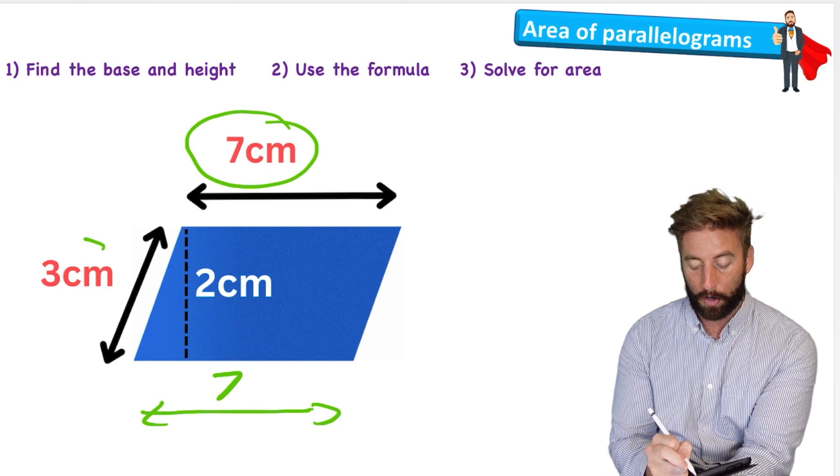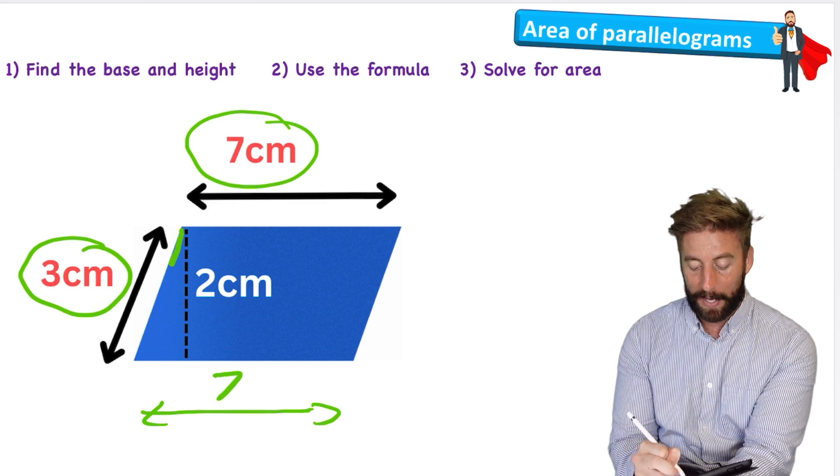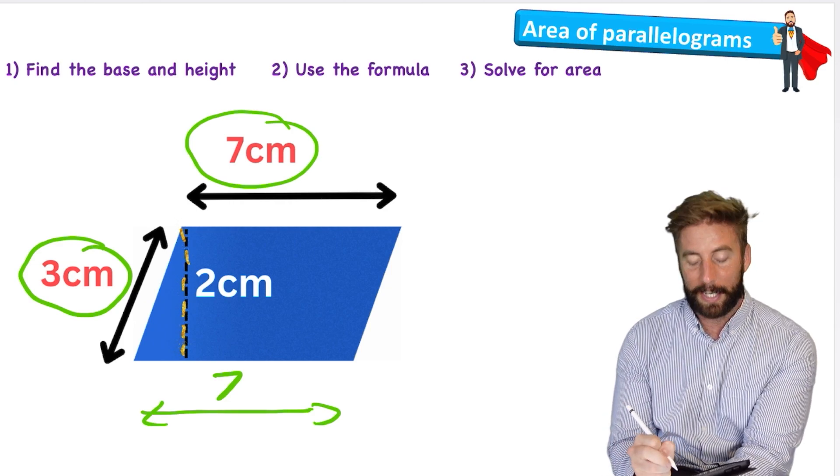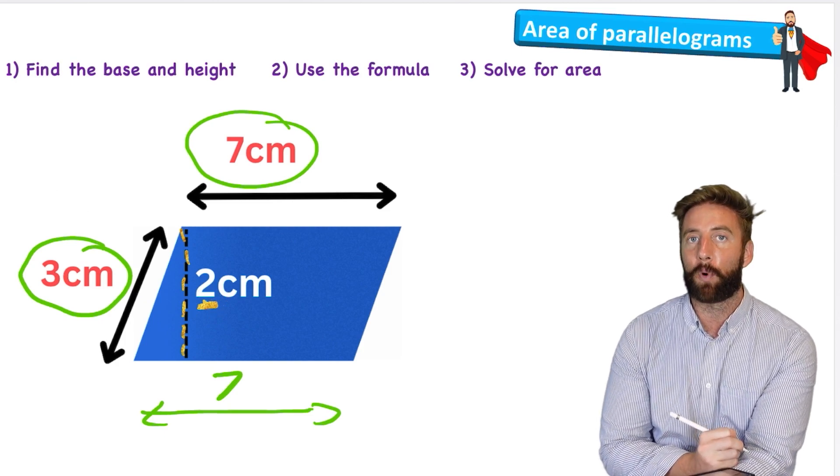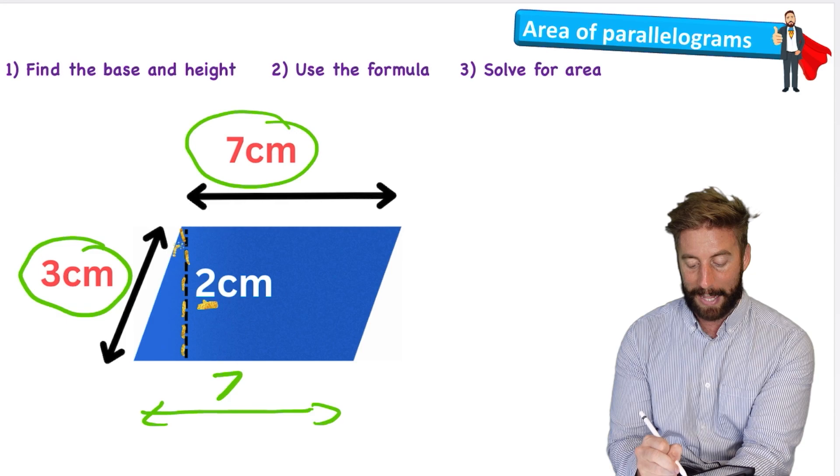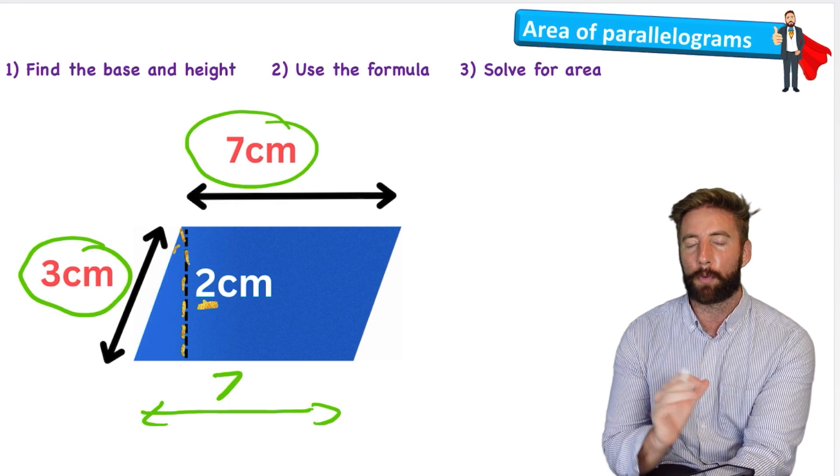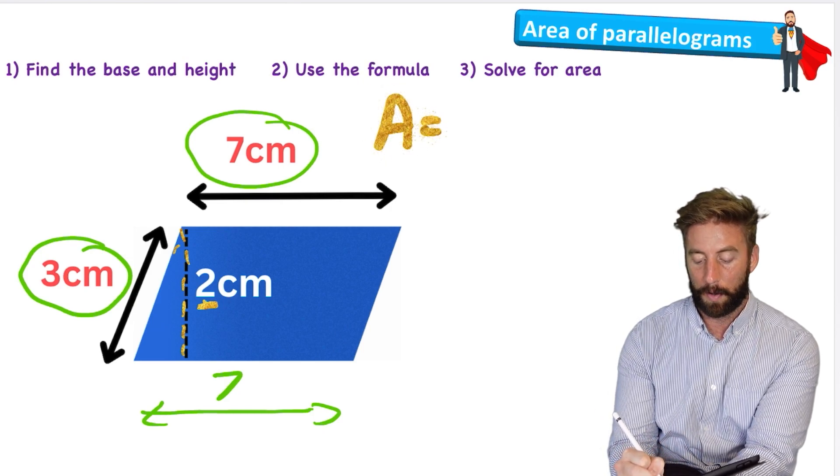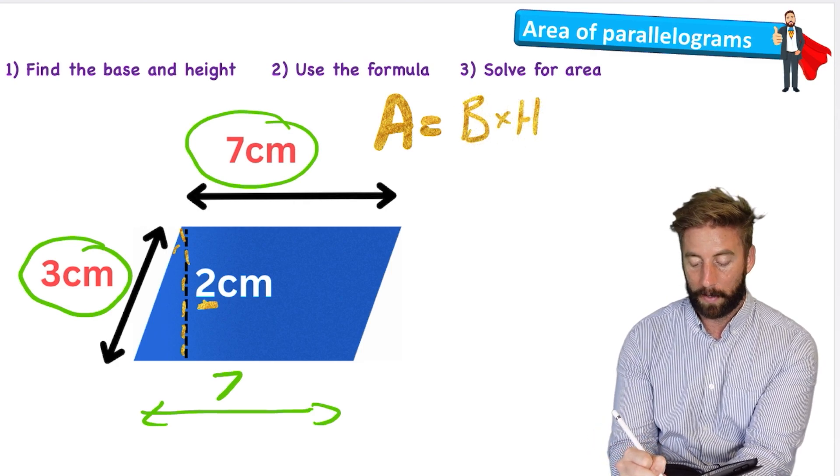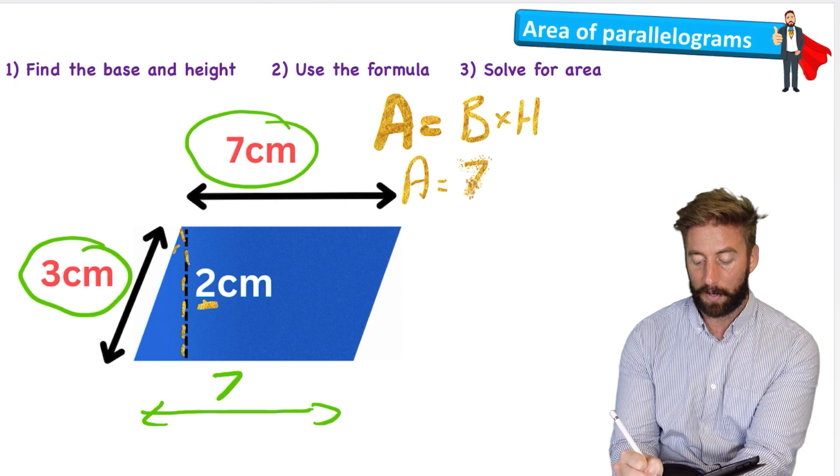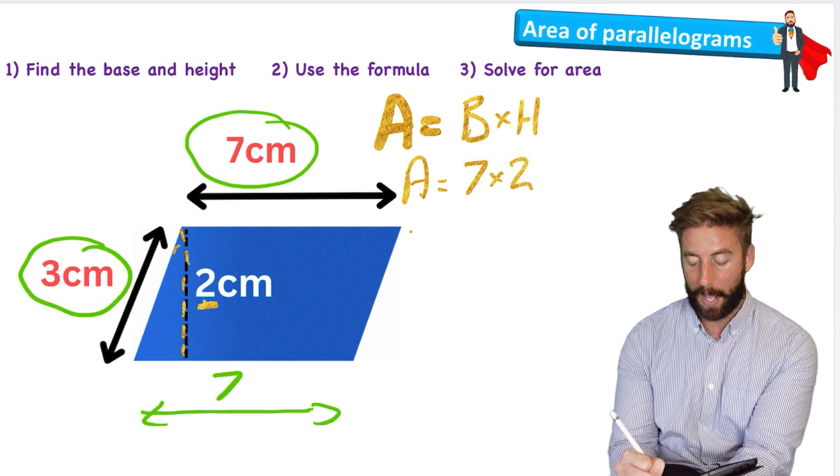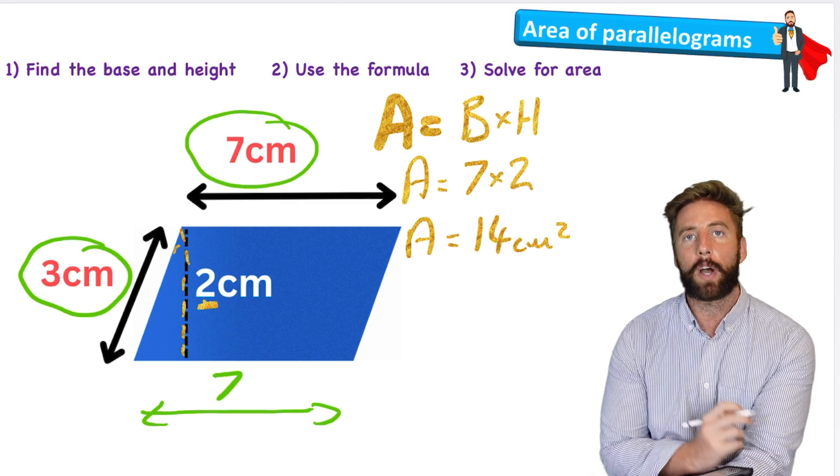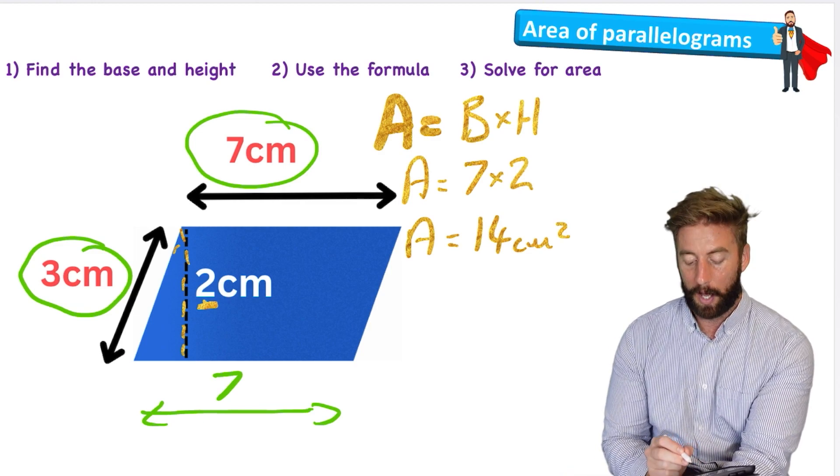But this time my height is not three. Three is the length of this line here, which is not the height. The height is given to us with this dotted line and we can see that it says two centimeters. Now it's very important that we only use the height for this formula and not this length, otherwise we're going to get a wrong answer. I'm going to show you more about how this works in a minute, but let's put it into our formula. So I have area equals base times height, and now this time I have area equals base, which is seven, and my height, which is two. So therefore area equals 14, 14 what? That's right, centimeters squared.